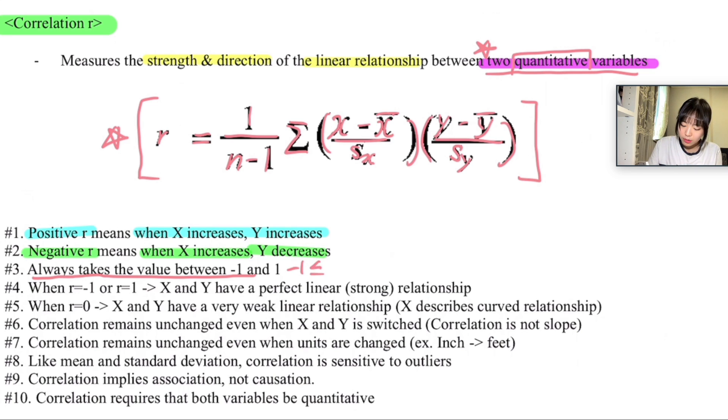Also, it's very important to remember that when r is minus 1 or if r is 1, we're going to say that x and y have a perfect linear strong relationship. So again, if r is equal to minus 1 or 1, we're going to say that they have a perfect linear relationship.